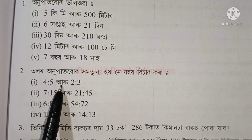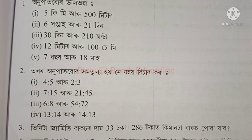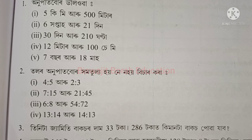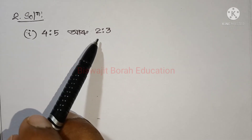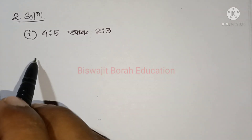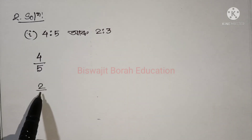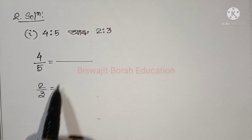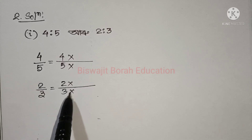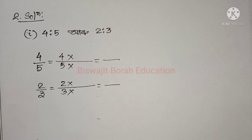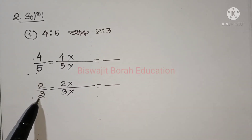This is the number 4 is to 5 and 2 is to 3.